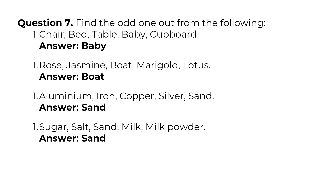Question 7: Find the odd one out from the following. Chair, Bed, Table, Baby, Cupboard — Answer: Baby. Rose, Jasmine, Boat, Marigold, Lotus — Answer: Boat. Aluminium, Iron, Copper, Silver, Sand — Answer: Sand. Sugar, Salt, Sand, Milk, Milk powder — Answer: Sand.